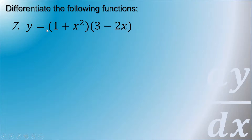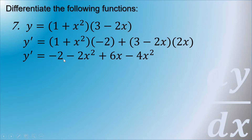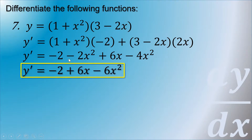Next example: y is equal to (1 plus x squared) times (3 minus 2x). You can use the multiplication rule or the FOIL method with the power rule. Using the multiplication rule: take the first term (1 plus x squared) times the derivative of the second term (which is negative 2), plus the second term (3 minus 2x) times the derivative of the first term (which is 2x). Simplifying: negative 2 minus 2x squared plus 6x minus 4x squared. Combining like terms, y prime equals negative 2 plus 6x minus 6x squared.